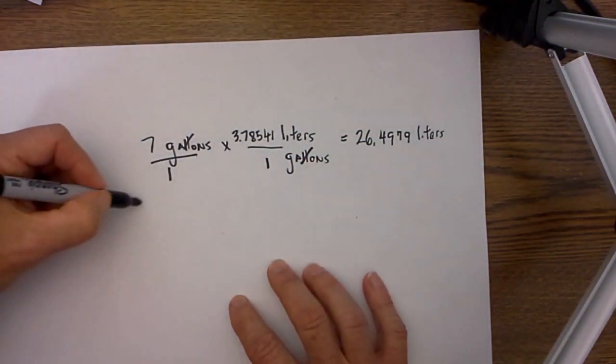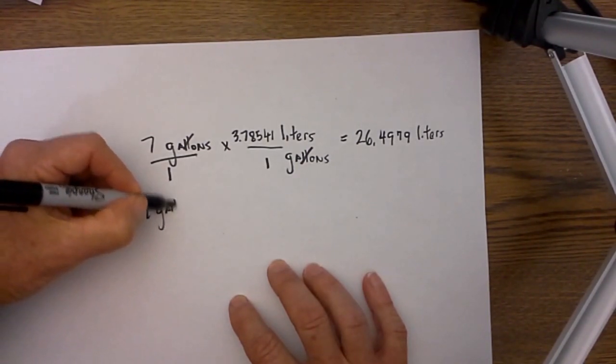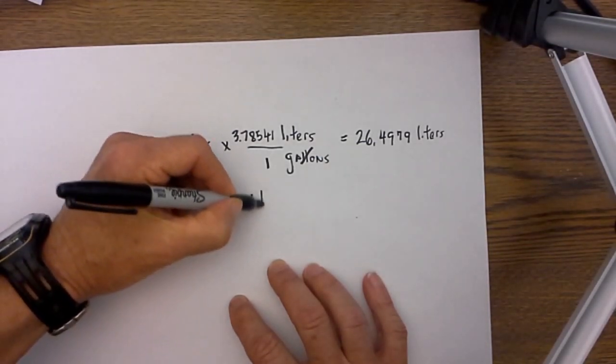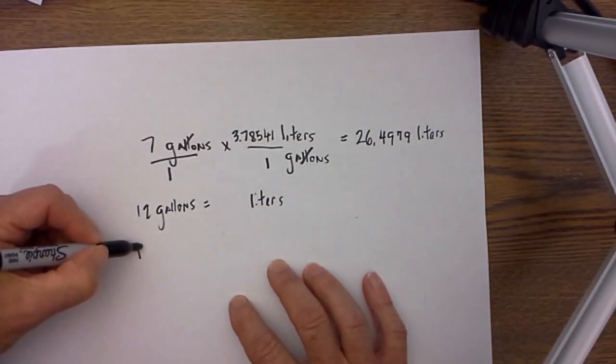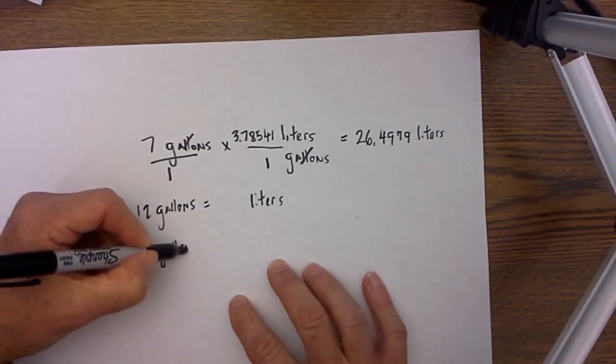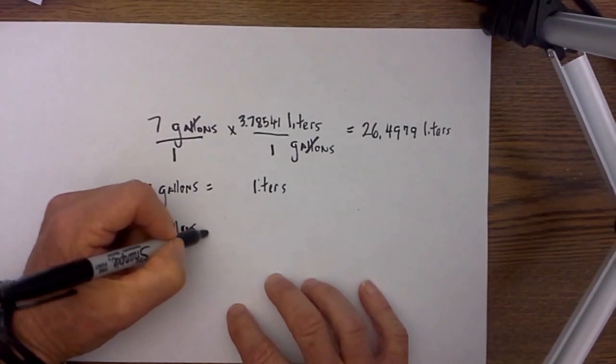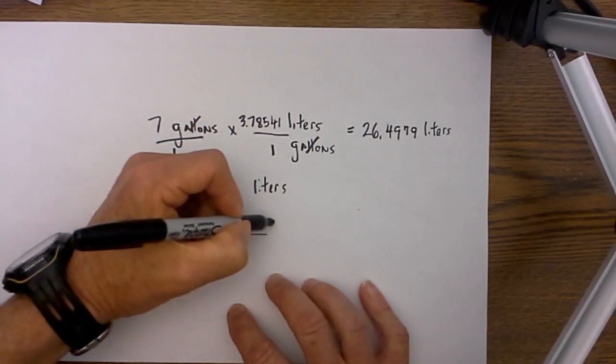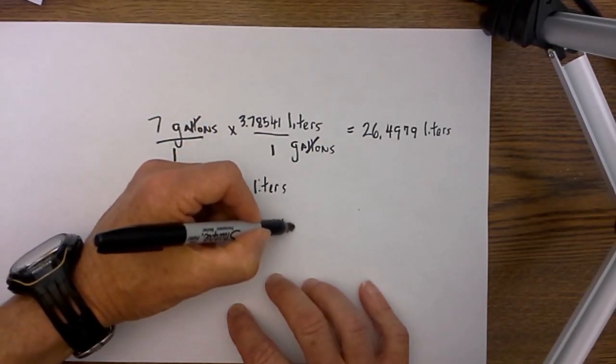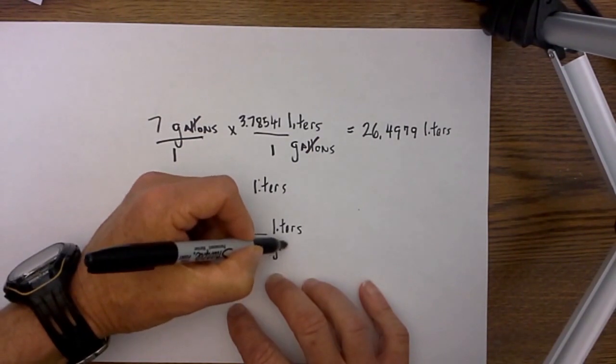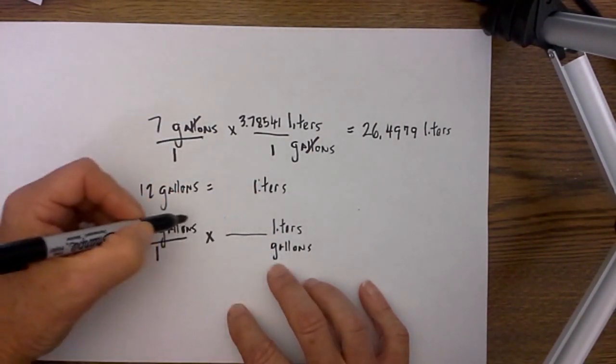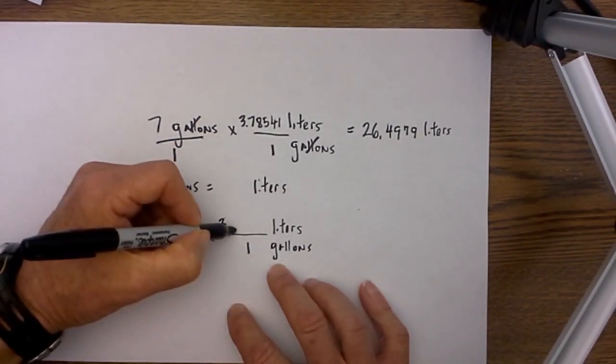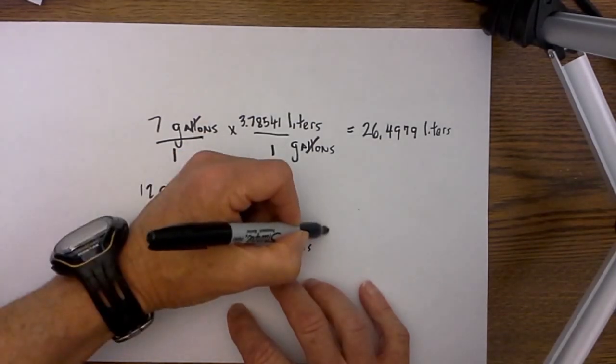Let's do one more of those. 12 gallons is equal to how many liters? So again I will place 12 gallons over 1, multiply, place the unit I am converting to on top, which is liters, place the other unit on the bottom, ask myself which is larger. Gallons are larger. 1 gallon is equal to 3.78541 liters.